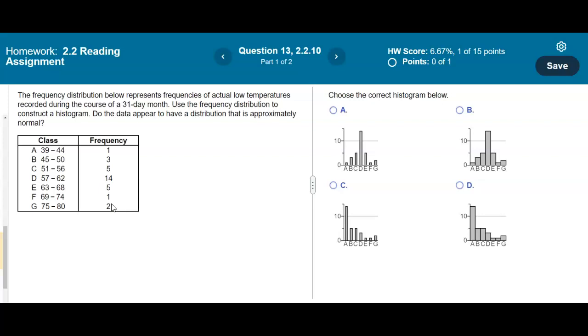Now remember that approximately normal means that you're going to have a histogram that has a bell shape. Remember that the definition of a histogram is where the bars are touching each other. The bar graph is where they don't touch each other so we're going to rule out A or C.